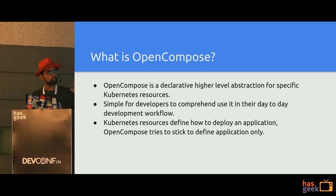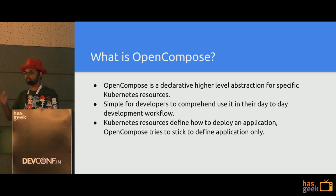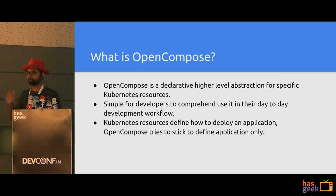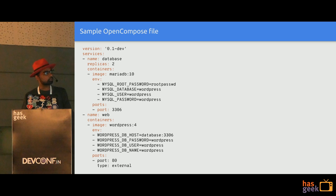If you look at the Kubernetes artifacts, they are more about how you want to deploy the application. We don't want developers to do that — we want developers to just define the application and that's it, not how to deploy the application. So OpenCompose more or less looks like this — it has services, you can define containers in a single service, ENVs, volume mounts, and things like that.